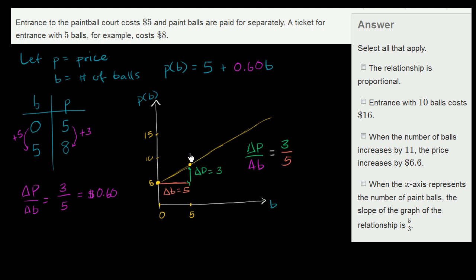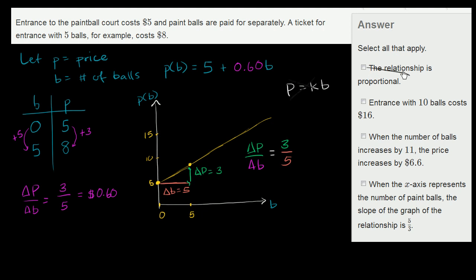Now let's answer the questions. The first is that the relationship is proportional. If we had a proportional relationship, it would look like P = k × B, and by definition, when the number of balls is 0, the price would be 0. But that's not the scenario here — when balls are 0, you're still paying $5. So this is not a proportional relationship.